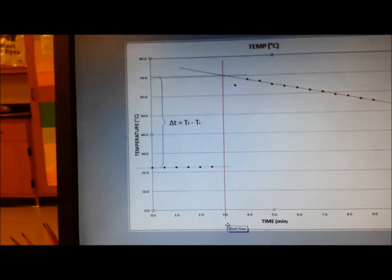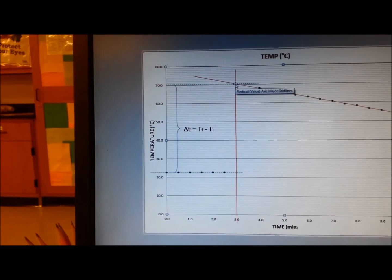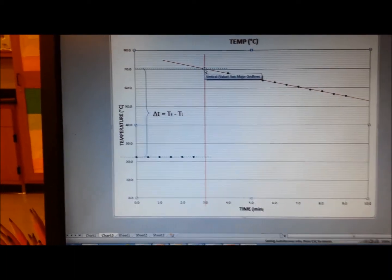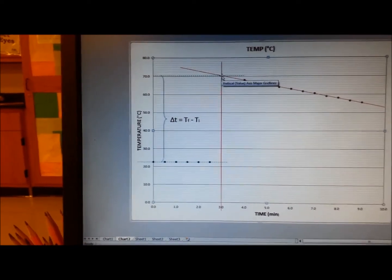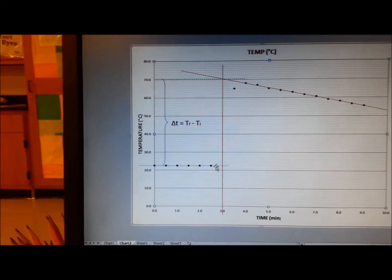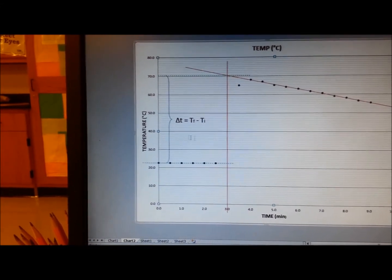That is going to tell us the theoretical maximum temperature that would have been obtained if there was no thermal inertia. With those two points, the maximum and the minimum temperature, we can get the delta T of the solution.